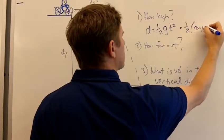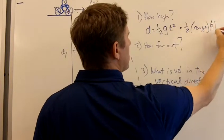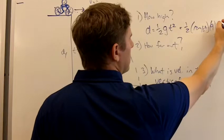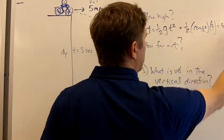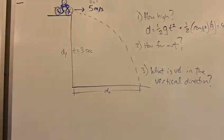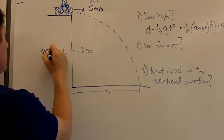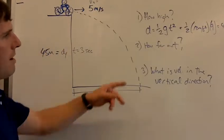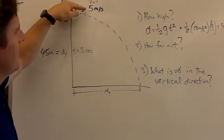So one-half times 10 meters per second squared times 3 squared, which is 9, is four and a half times 9, which is 45 meters. That's how high this cliff is. So dy equals 45 meters.